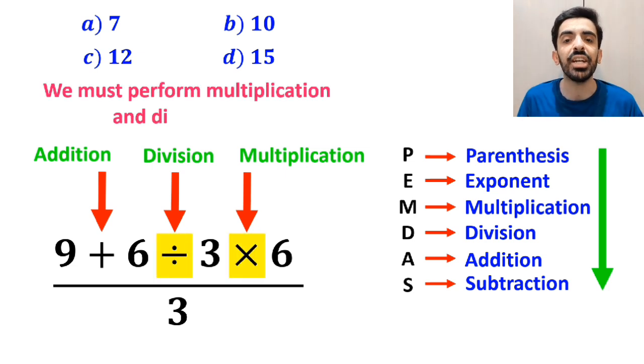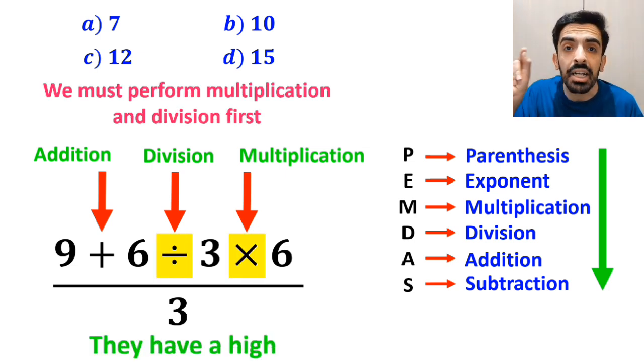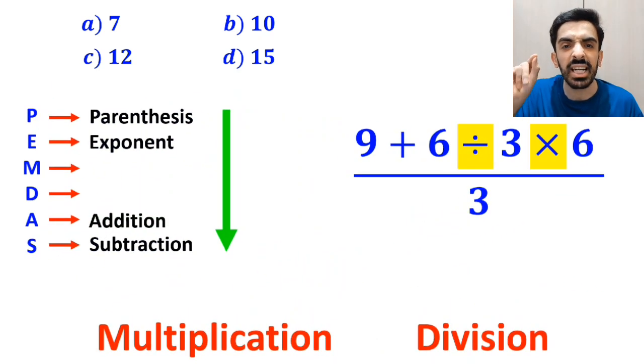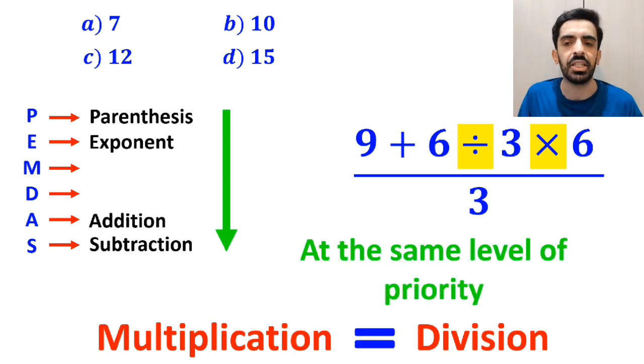According to the PEMDAS rule, we must perform multiplication and division first because they have a higher priority than addition. However, it is very important to remember that multiplication and division are at the same level of priority.